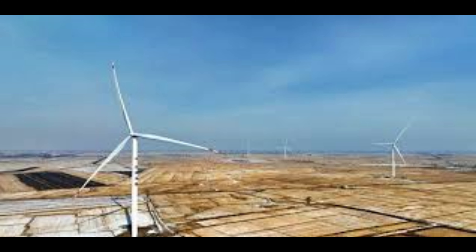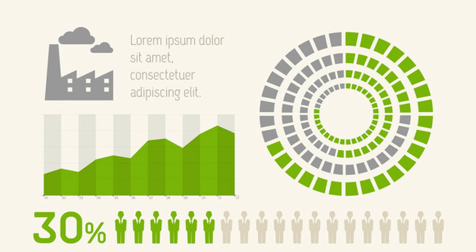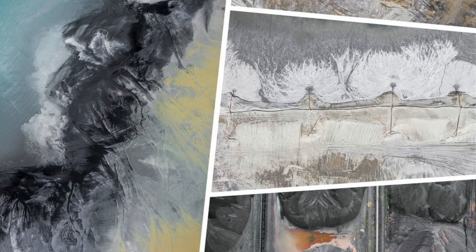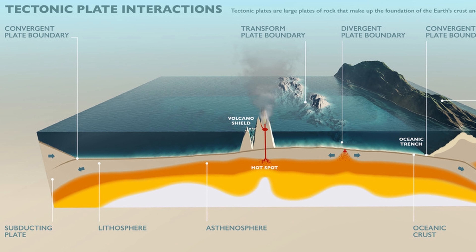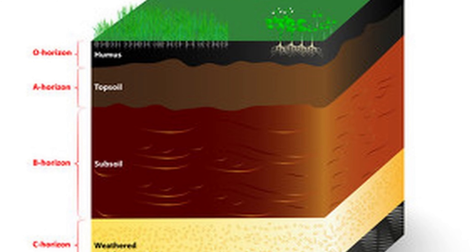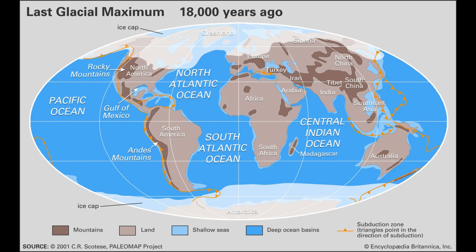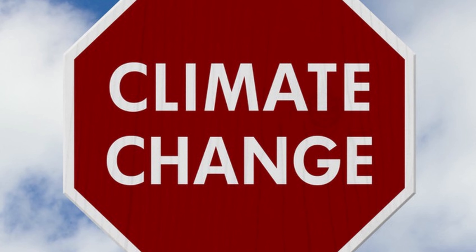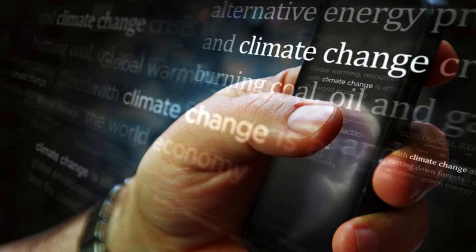Geological evidence from the past provides a sobering perspective on the rate of change currently occurring in earth's climate due to human activities. Mitigation strategies to address climate change include reducing greenhouse gas emissions and adopting sustainable land use practices. These actions aim to mitigate the impact of human-induced changes on geological cycles, underscoring the urgency of addressing human-induced climate change and its potential consequences.